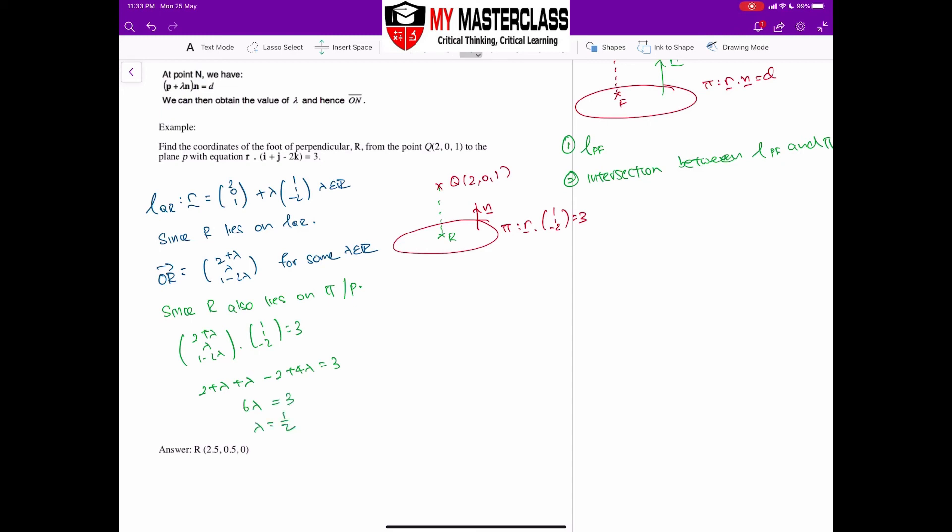So with λ equal to half, I'm going to sub back into my OR. So OR will then be equal to (2+½, ½, 1-2×½). This will give me (5/2, ½, 0).